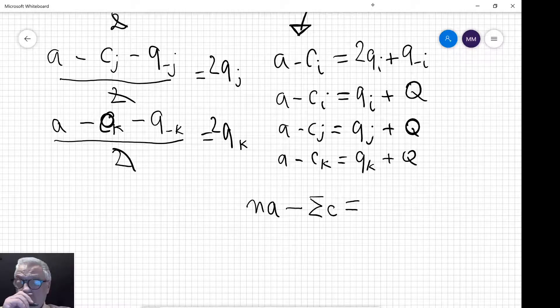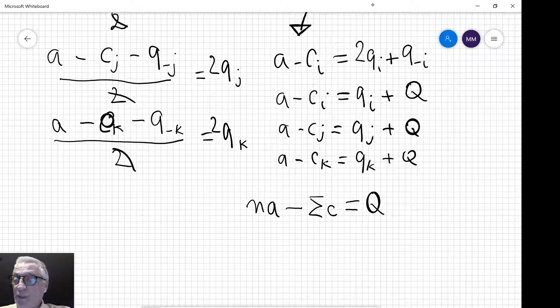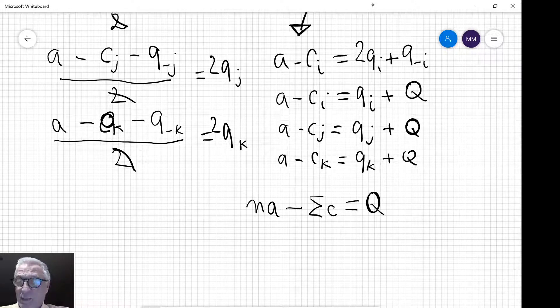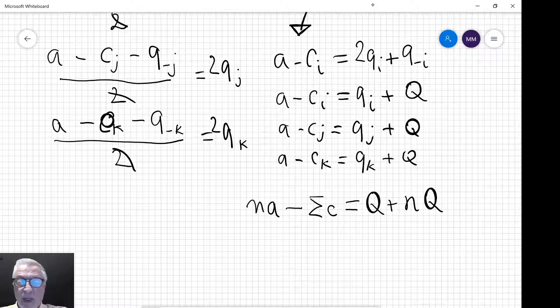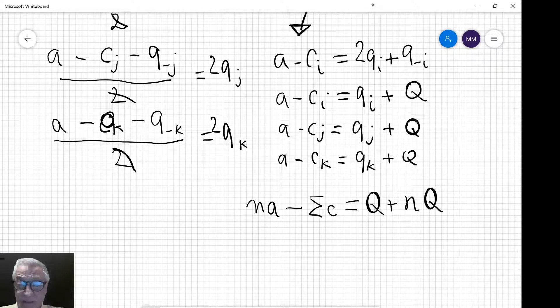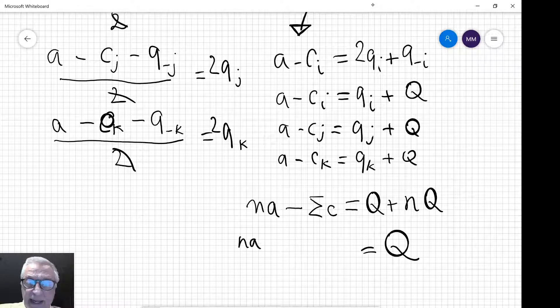And what have I got here? Q_I plus Q_J plus Q_K is the output of the industry, right, so that's the big Q. And here I've got one, two, three Q's because we're having three firms; if we had n firms that would be n Q's.